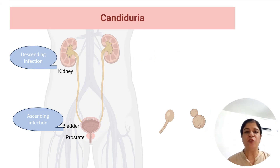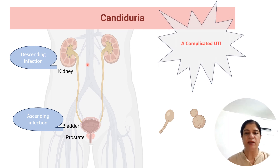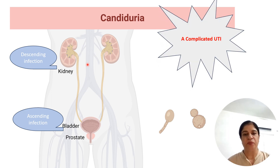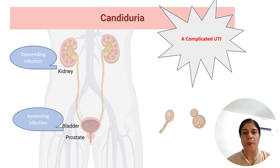Candiduria involves the whole genitourinary system, right from the kidneys to the urinary bladder. This infection can be ascending or descending. When it is a descending infection, it is acquired because of candidemia, and various studies have found that renal parenchyma is embedded in almost 70% of cases at autopsy. So it is a complicated UTI.